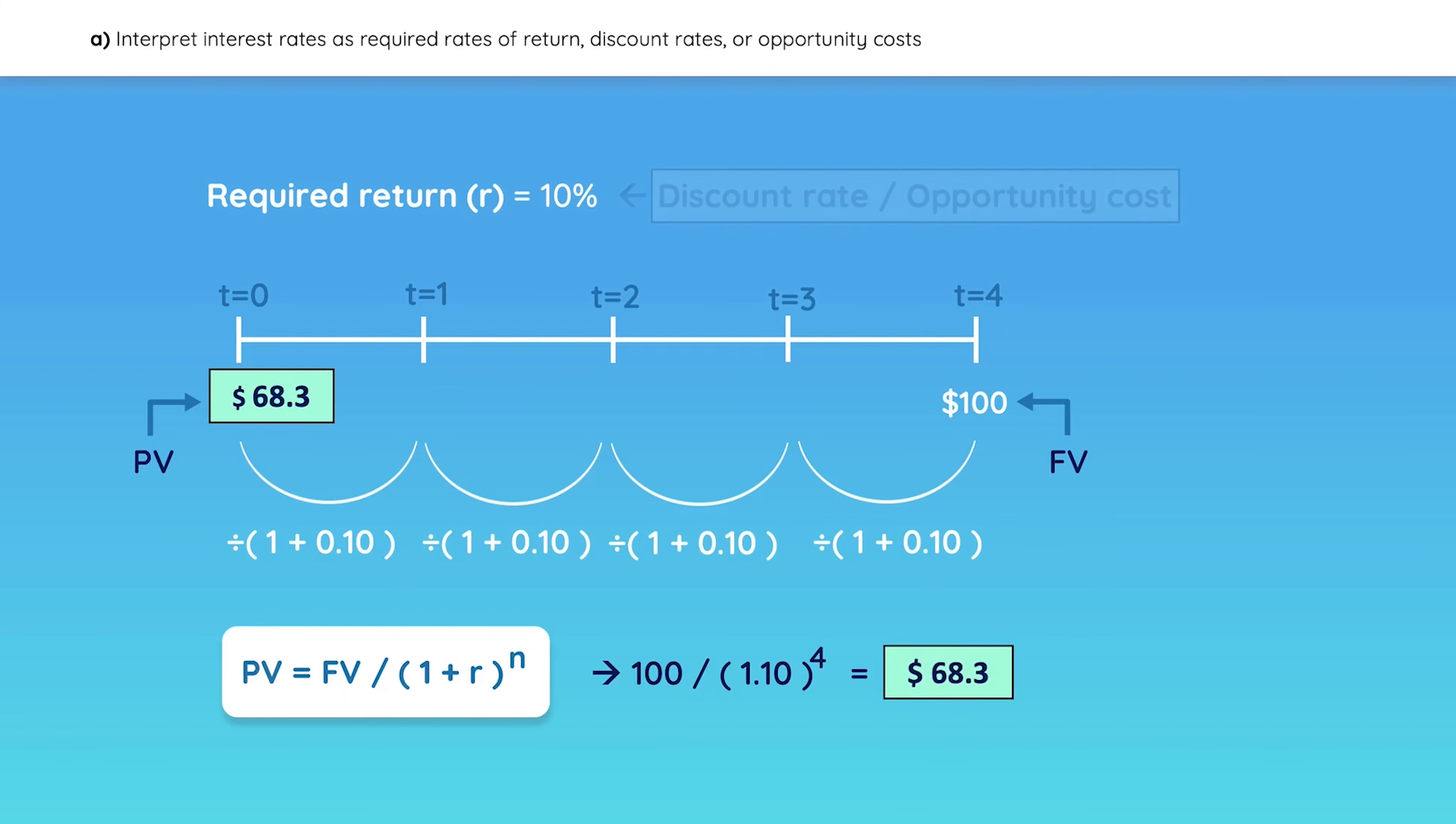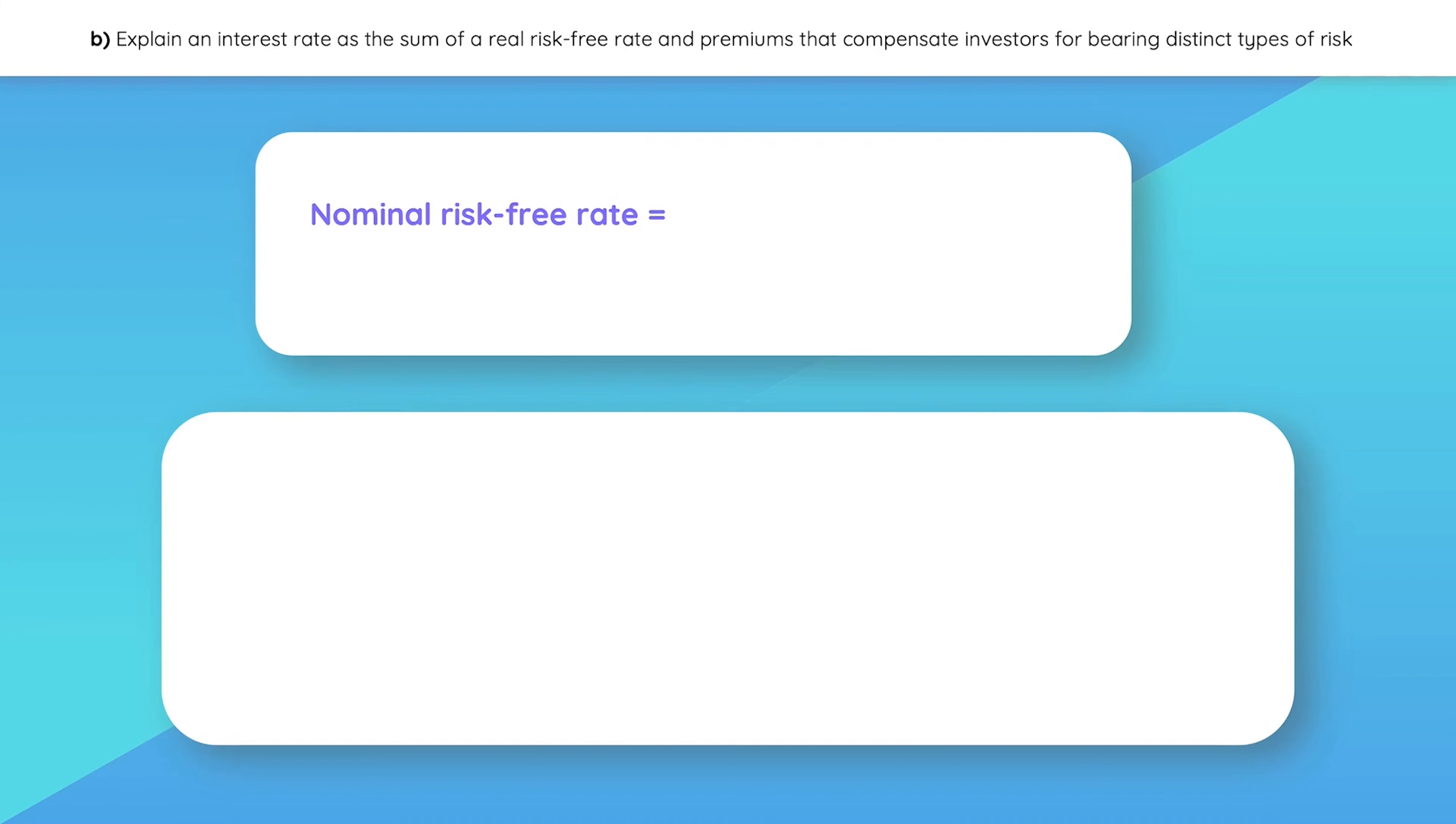Also, remember that the required rate of return is also known as the discount rate or opportunity cost. What is the formula for the nominal risk-free rate? It is simply the real risk-free rate plus the expected inflation.